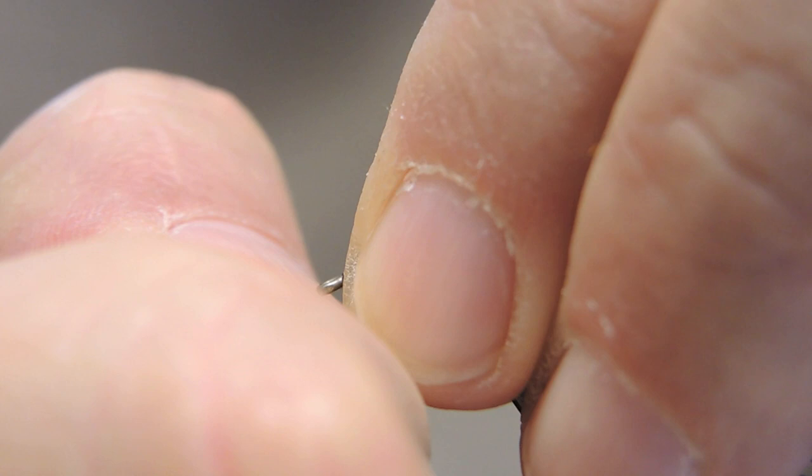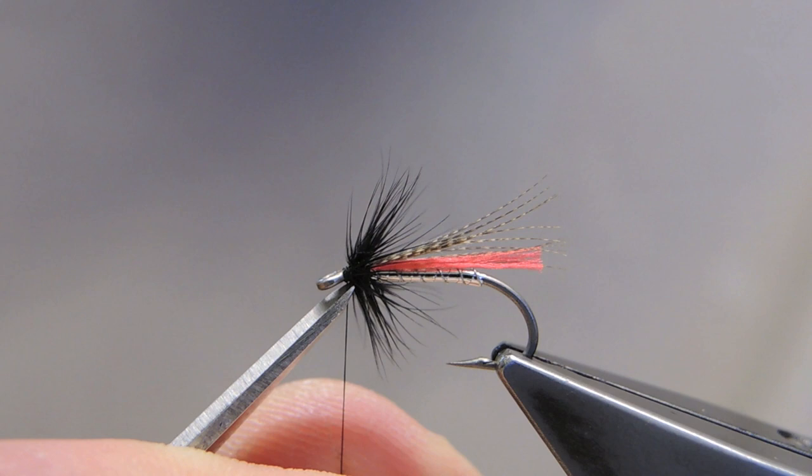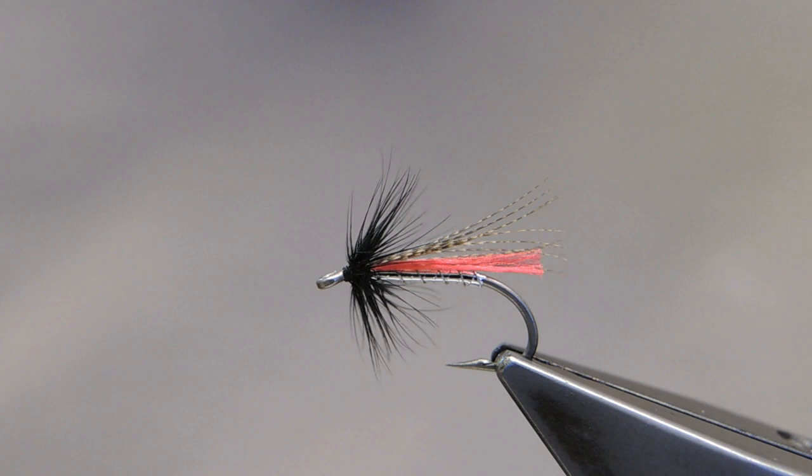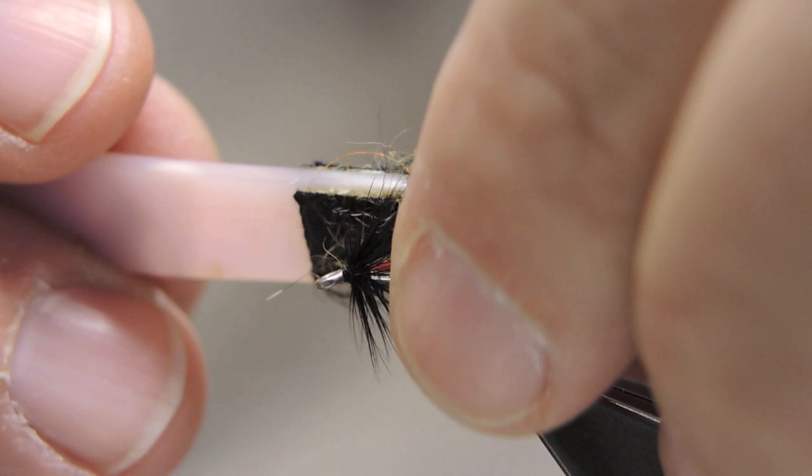Before trimming the waste, use a little bit of Velcro to brush out both the Glowbrite and the Mallard.